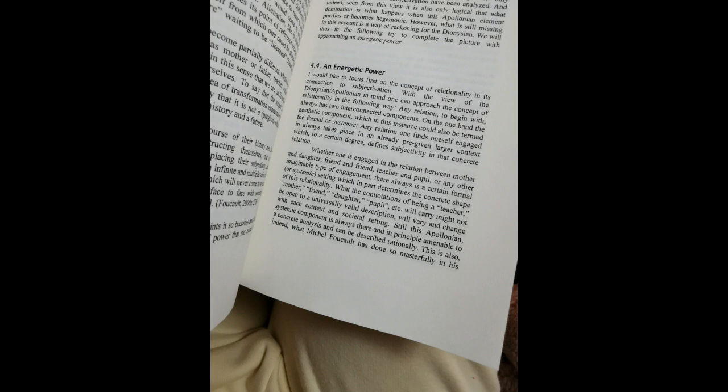Any relation one finds oneself engaged in always takes place in an already pre-given larger context, which, to a certain degree, defines subjectivity in that concrete relation. Whether one is engaged in the relation between mother and daughter, friend and friend, teacher and pupil, or any other imaginable type of engagement, there always is a certain formal or systemic setting, which in part determines the concrete shape of this relationality. What the connotations of being a teacher, mother, friend, daughter, pupil, etc., will carry might not be open to a universally valid description, will vary and change with each context and societal setting. Still, this Apollonian systemic component is always there, and in principle amenable to a concrete analysis, and can be described rationally. This is also what Michel Foucault has done so masterfully in his analysis of discourses and practices.